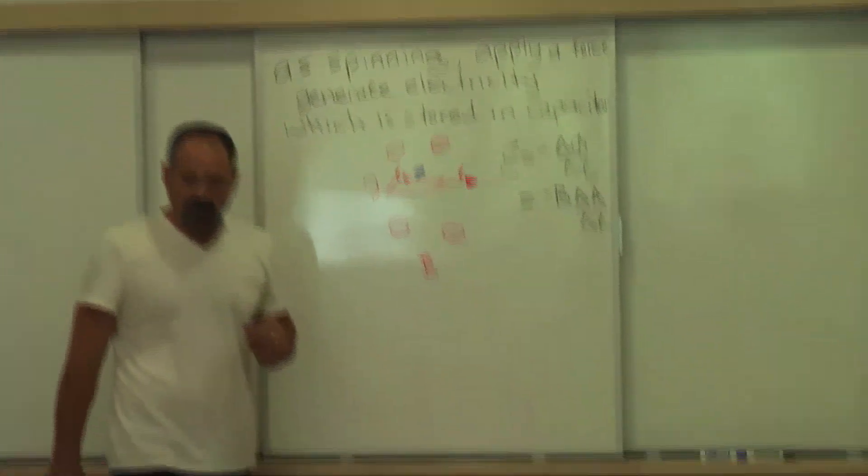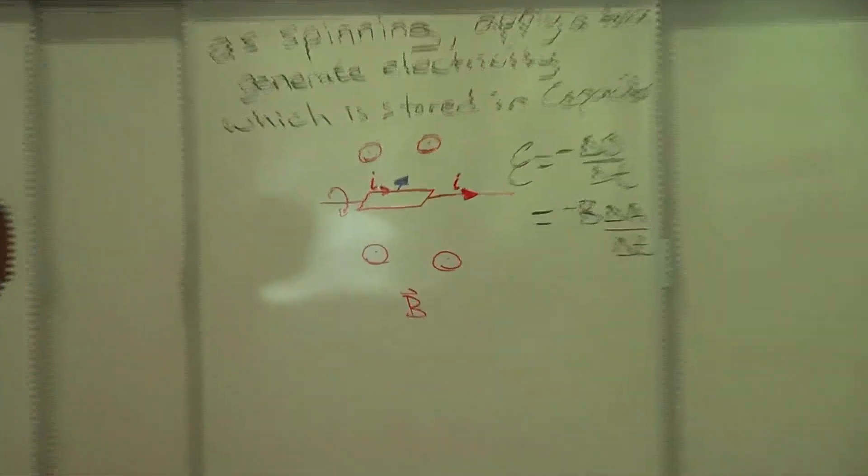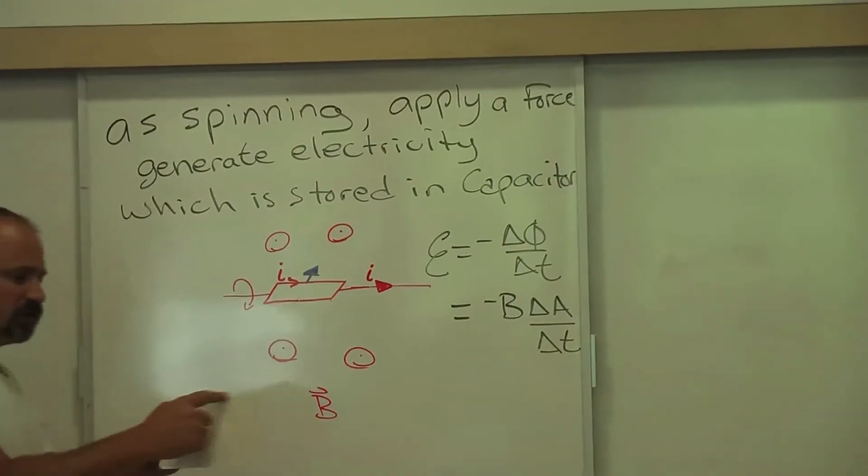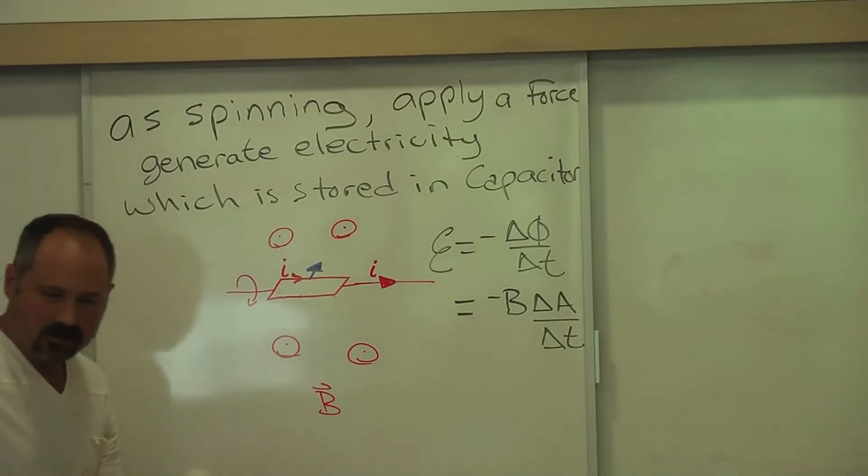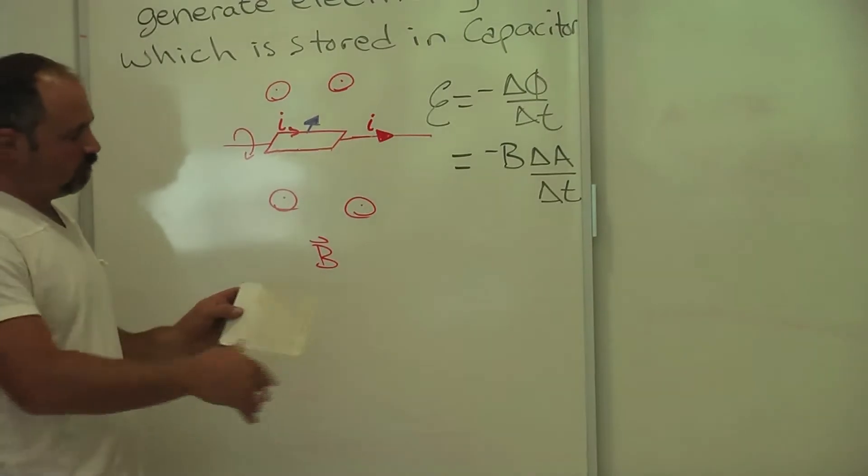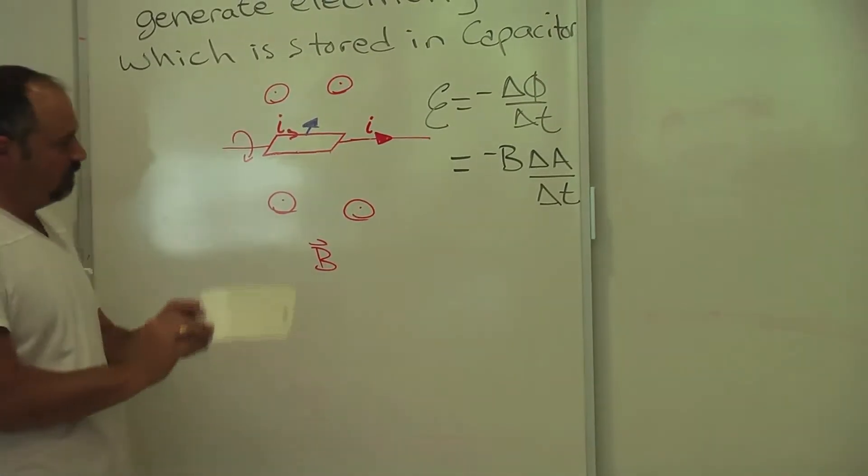Well, at first, when I'm spinning the handle and using it as a generator, imagine this is the coil of wire. Because for any generator you have a coil of wire and a magnetic field.